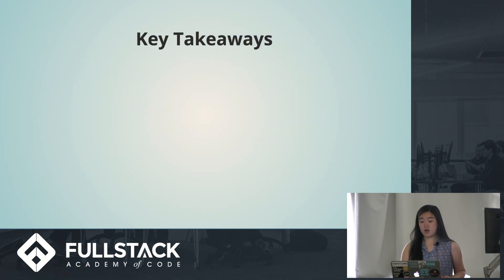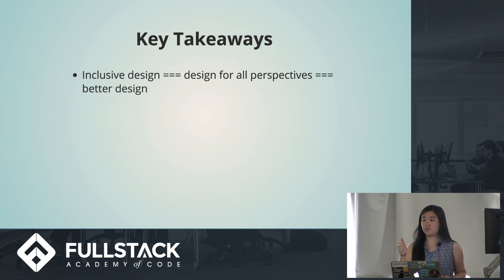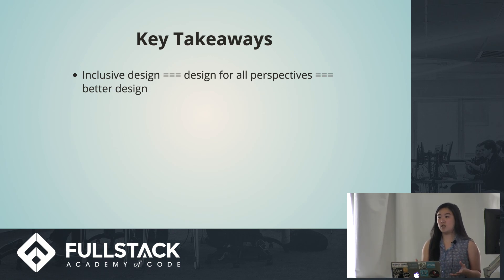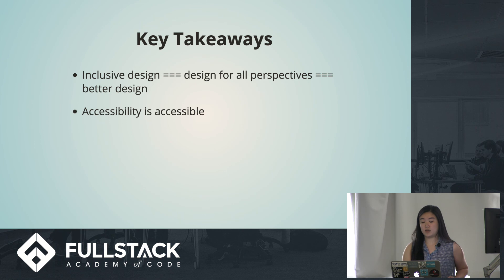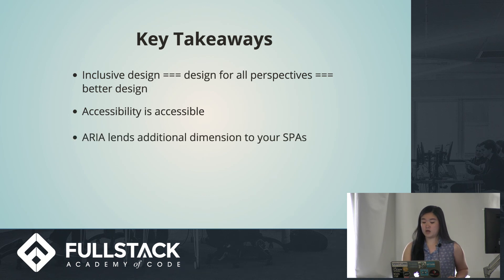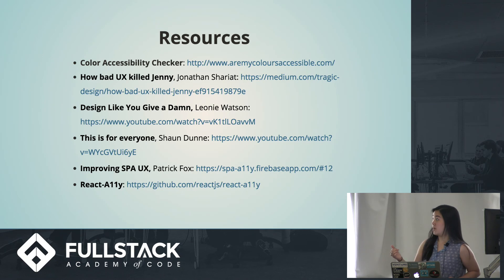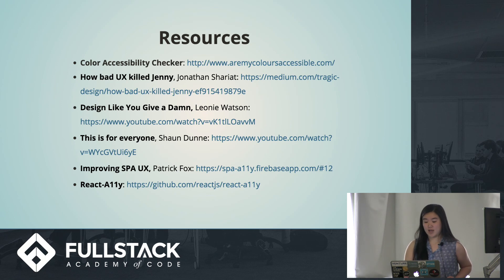A couple of key takeaways: first, inclusive design is the way to go — as developers, it's a cool creative challenge that makes you think about what you're doing more deeply. Second, accessibility isn't a pain; it's pretty easy to incorporate into your designs and builds. I've given you a couple of concrete things you can use, and I'd encourage you to check out those resources for a deep dive. Lastly, ARIA is really cool and lends an important third dimension to how we as JavaScript developers can expect people to experience what we create. Here are some of those resources — definitely check them out. I especially like that Medium article if you like weird medical accidents. That's about it!